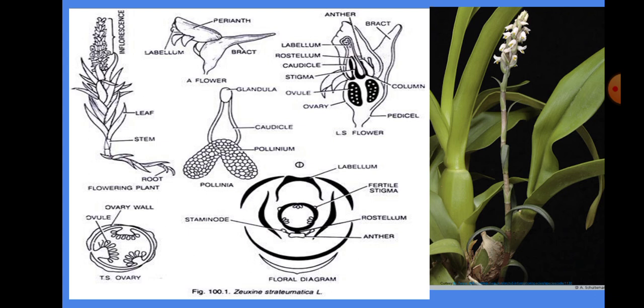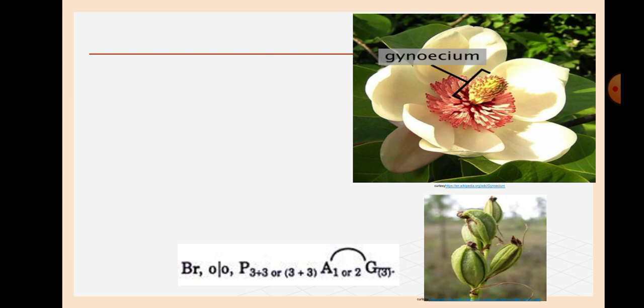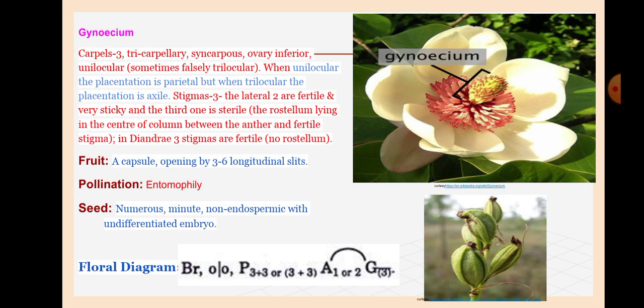This is the floral diagram of the Orchidaceae. The floral formula shows the flower, the lace of the flower, pollinia, then the T.S. of the ovary, and the last one is the floral diagram. Gynoecium: Carpels three, tricarpellary, syncarpous, inferior, unilocular — when unilocular the placentation is parietal; when trilocular the placentation is axile. Fruit: A capsule, dehiscing by three to six slits. Pollination: Entomophilous. Seeds: Numerous, minute, non-endospermic, with undifferentiated embryo.